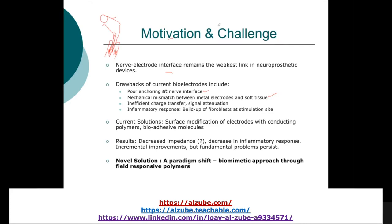There is also inefficient charge transfer and signal attenuation due to metal resistance. Propagation of electrical signals in the body is very fast because it uses ions with low resistance and dedicated channels. A metallic wire introduces resistance that can cause signal attenuation. Additionally, there is an inflammatory response at the stimulation site — even with biocompatible metals, we observe a large presence of fibroblasts at the stimulation location. All of these challenges led us to think about how we can develop better electrodes.